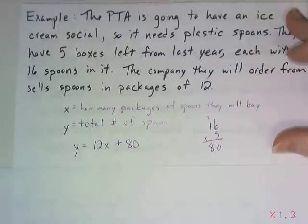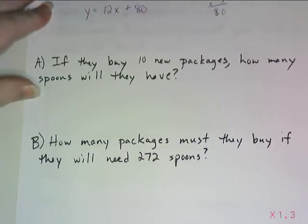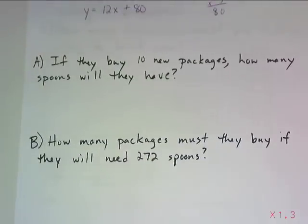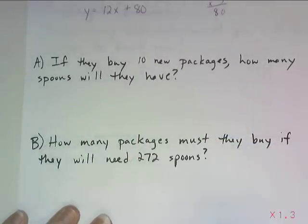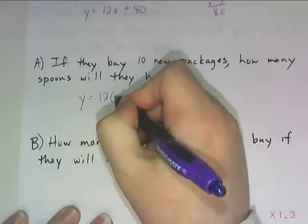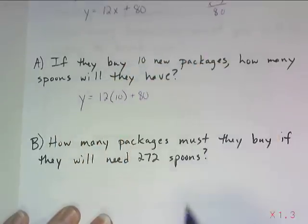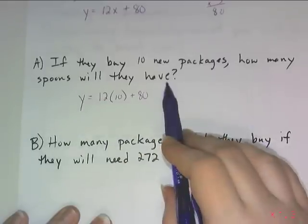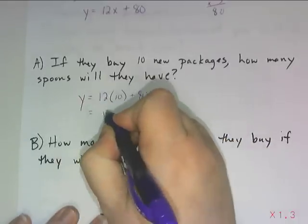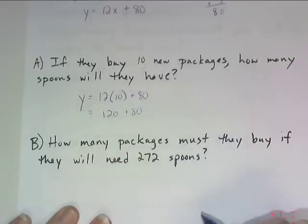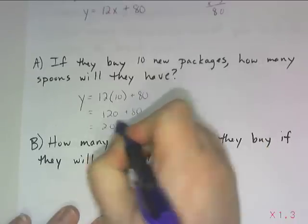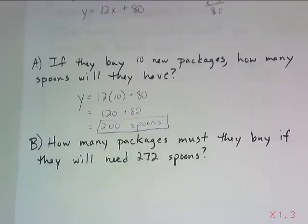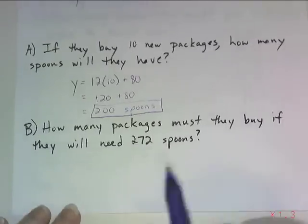Now let's see how we can use that equation to answer a couple of questions. If they buy 10 new packages, how many spoons will they have? I'm being given the number of packages — an x value — so I fill that in and solve for y, which is the total number of spoons. 12 times 10 is 120, plus the 80 they still had left over, which tells us they will have 200 spoons. Make sure we include the unit — it's in your variable definition, but we also need it next to our answer.